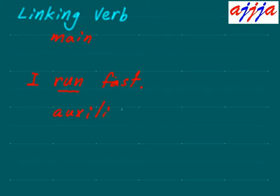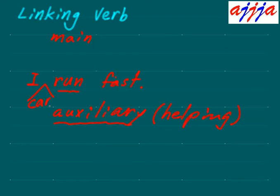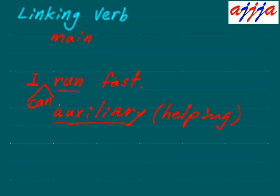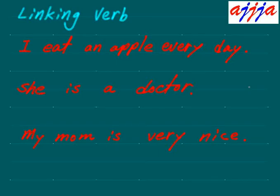We also have auxiliary verb, which is sometimes called a helping verb. You can add 'can' right here — 'I can run fast.' So 'fast' is an adverb, you don't have to worry about that. The main sentence is the subject and a verb. I used a helping verb or auxiliary verb: 'I can run.' Or you can say 'I may run fast,' or 'I must run fast.' Things like that — that's a helping verb.